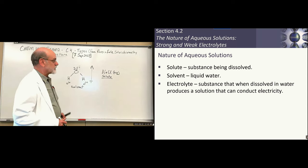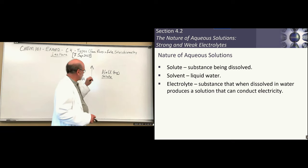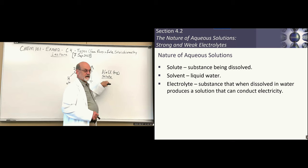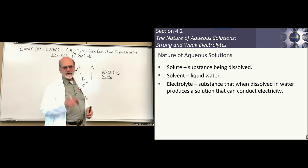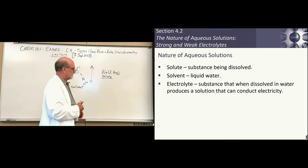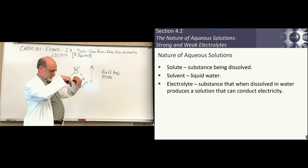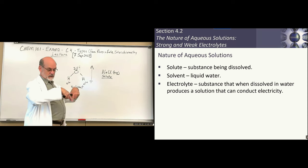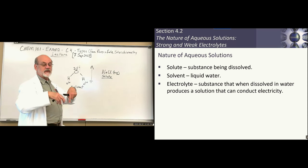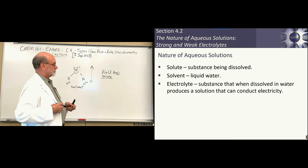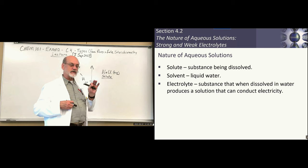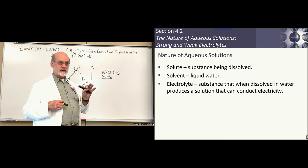Another term: electrolytes. Those are substances that are dissolved in water — always the solute — that will conduct an electrical current through the water. You have a completed circuit except for two electrodes going into your solution that aren't connected; the only way to connect them is through mobile ions. Any substance dissolved in water that allows conduction of electric current is considered an electrolyte.